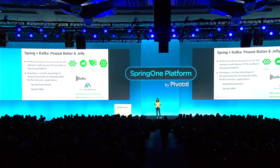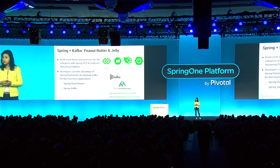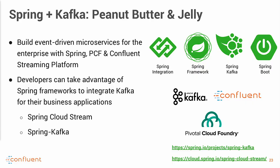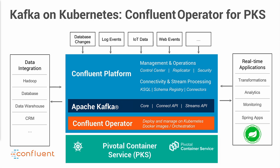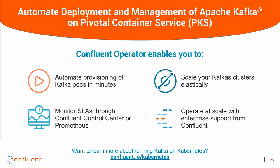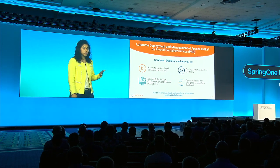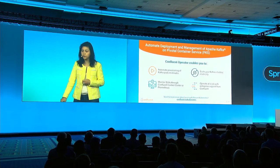Spring and Kafka go really well together. If you want to adopt this event-driven microservices paradigm, there are a few projects you can leverage. Developers can take advantage of Spring frameworks that integrate Kafka directly, including Spring Cloud Stream and Spring Kafka. If you're struggling to deploy Apache Kafka, we're collaborating closely with Pivotal to deploy Kafka more easily on the Pivotal Container Service using the Confluent Operator — meant to automate provisioning of Kafka pods in minutes and scale your Kafka clusters easily. This is most relevant if you're on Kubernetes; otherwise you can use the Confluent Platform. This program is in early access, soon to go generally available — sign up at confluent.io/kubernetes.